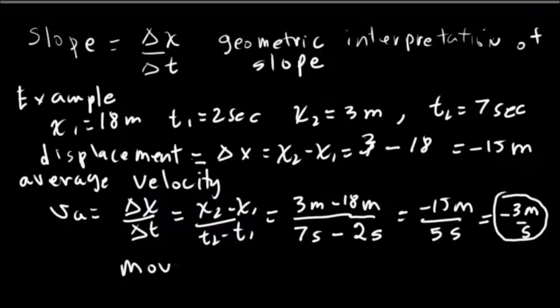We're going to the left at minus 3 meters per second. So we're moving to the left, which is just fine. Let's look at another example.